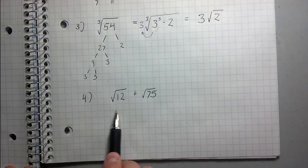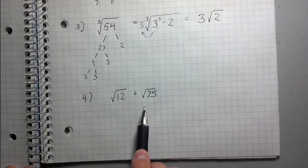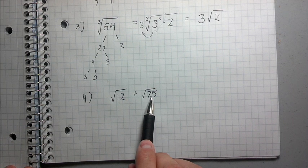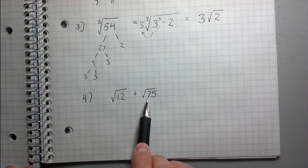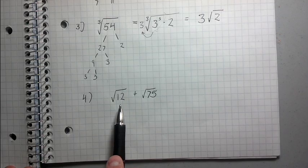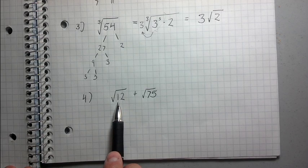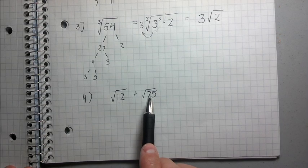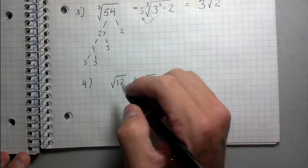Now on the surface, it looks like you can't do anything to further simplify this expression because root 12 and root 75 are not like terms. It would be like trying to combine an x and a y. You can't do it. So what I'm going to do is I'm going to use this process which we've been doing to rewrite 12 and rewrite 75 and then something might happen. So you'll see what I'm talking about.